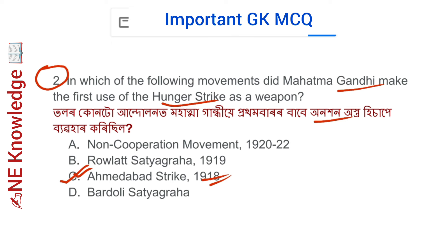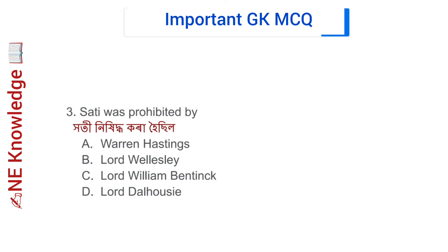Question number 3: Sati was prohibited by whom? Options: Warren Hastings, Lord Wellesley, Lord William Bentick, and Lord Dalhousie. Correct answer: Option C — Lord William Bentick. It was prohibited by Lord William Bentick.